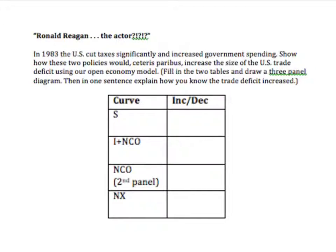The question asks us to work out the implications of this policy in the open economy model. We're going to have to draw a three-panel diagram and fill in two tables. The first table just asks us how the curves are going to shift. Since only one policy was described, we can be pretty sure that only one of these curves is going to shift.